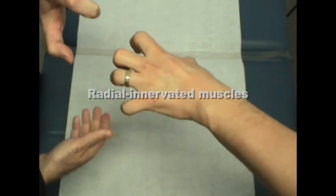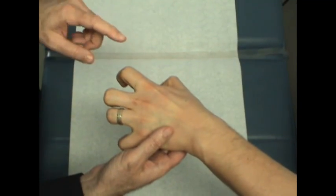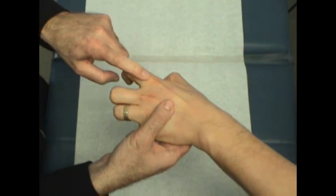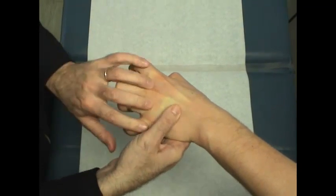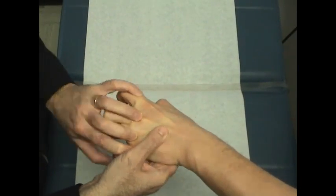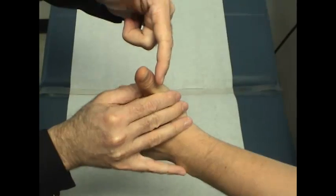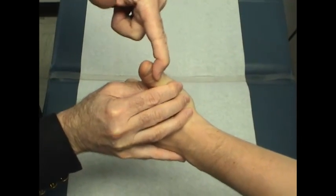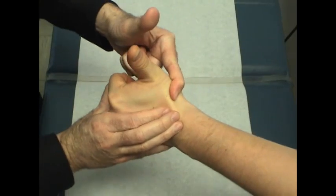Now the radials. I test extensor digitorum in this way to get rid of the lumbricals. Don't let me push you down. You can do them all at once like this. Bend the thumb back like you're hitchhiking. Extensor pollicis longus. Extensor pollicis brevis. Abductor pollicis longus.